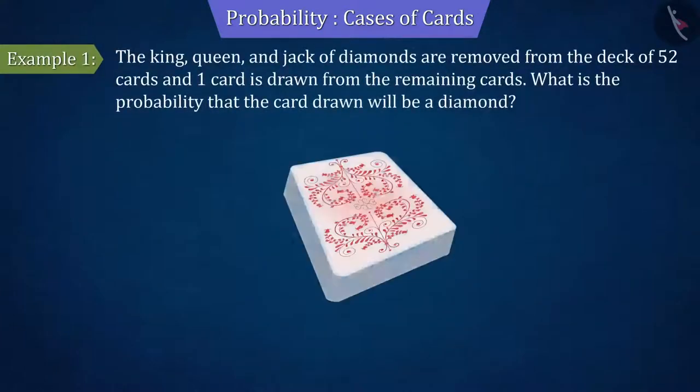If a king, queen and jack of diamonds are removed from the deck of 52 cards and the remaining cards are shuffled well, if one card is drawn from the pack, what is the probability that the card drawn will be a diamond? Let's discuss this.